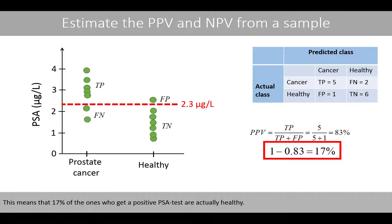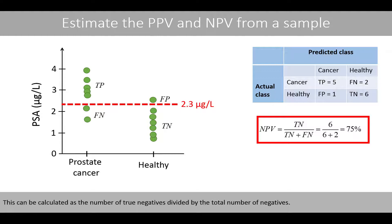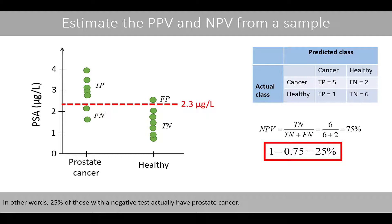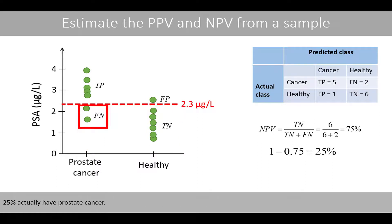This means that 17% of the ones who get a positive PSA test are actually healthy. In contrast, the negative predictive value is defined as the proportion of individuals with a negative test who actually are healthy. This is calculated as the number of true negatives divided by the total number of negatives. Out of the 8 individuals below the cutoff line, 25% actually have prostate cancer.